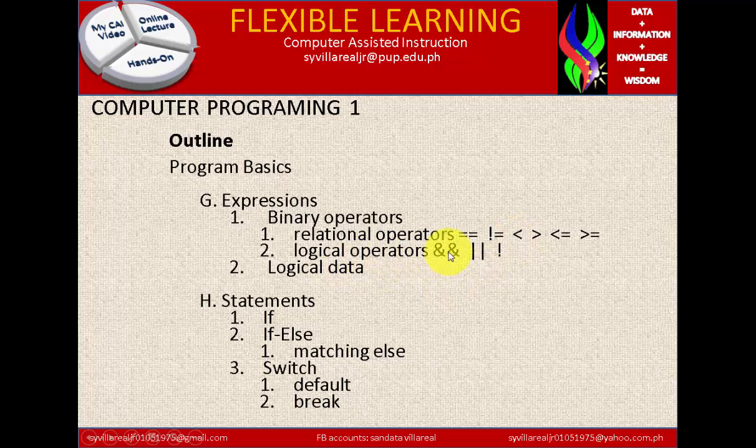Now in logical operators, we have the ampersand sign. One sign is considered to be ampersand. Two ampersand signs is considered to be AND operator as logical. And we have the pipe - one sign of this is pipe. So we have two pipes here, and this is considered to be OR operator. And the last is considered to be exclamation mark, the identification of NOT. That's why I call this one in the relational operator not equal. So this is NOT.